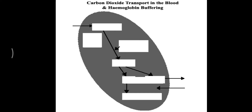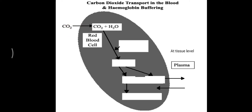The respiratory system works in accordance with one important protein — hemoglobin — whose most important function is transportation of oxygen and carbon dioxide. At the tissue level, various tissues undergo various metabolic processes, and due to this metabolism, carbon dioxide is generated. This carbon dioxide goes into the plasma, and from the plasma it enters inside the red blood cell.